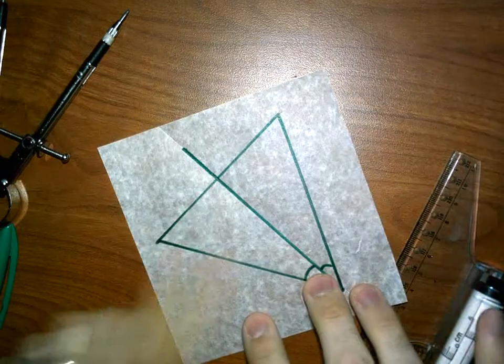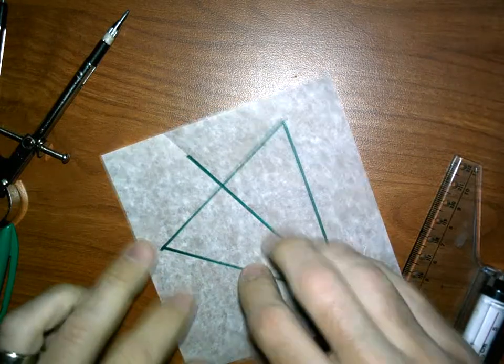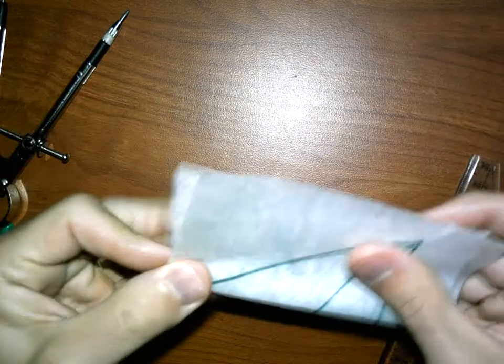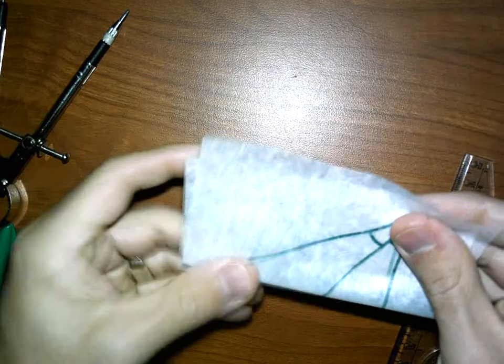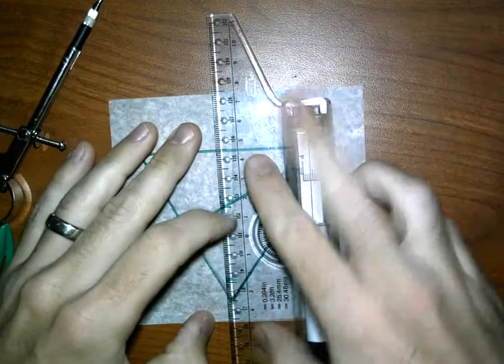So let's take this angle now. I'm going to fold it over so the two sides match. Make a crease. It should go through the vertex. That was a little better this time.